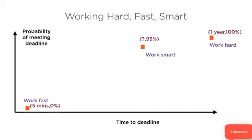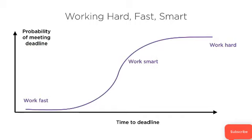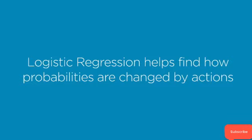For this 95% probability, how many days before the deadline do you need to start? In order to figure this out, you'll need to fit a curve on this data, and this curve is an S curve. This S curve is the logistic regression S curve. Once we have a curve fitted on the data, you can see that for a 95% probability of hitting your deadline, you will need to start work on your project 11 days before the deadline — that's in our hypothetical example. The time to deadline is on the X axis and the probability score is on the Y axis, and this is the fundamental intuition underlying logistic regression.